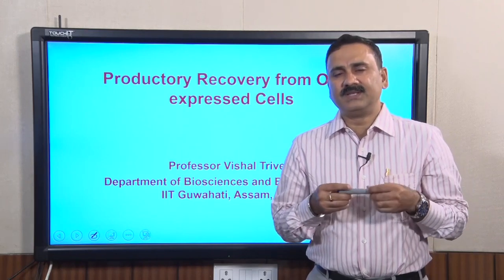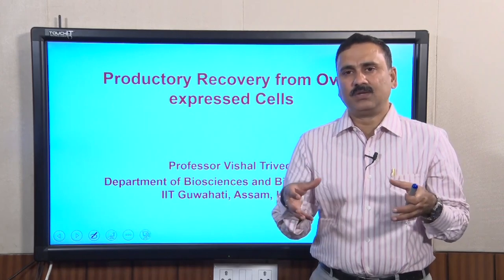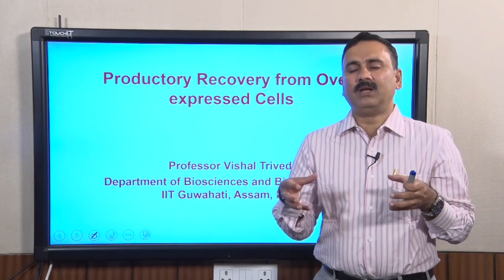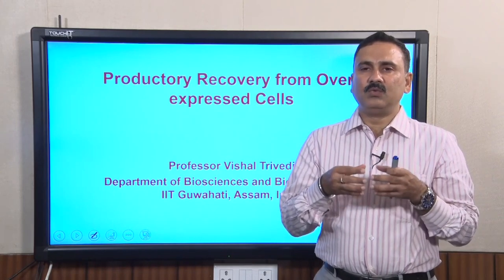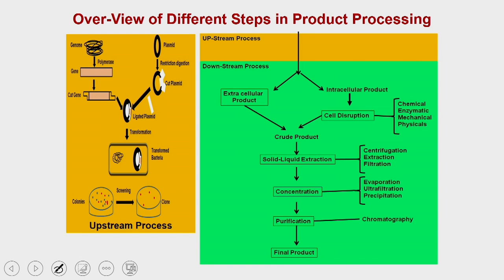Today we are going to discuss the extraction of the product from overexpressed cells. The complete process of product development in biotechnology is considered to be in two phases: upstream processes and downstream processes. Upstream includes getting the gene from the host strain, cutting the gene, generating sticky ends, processing the transforming agents, and generating the recombinant clone.